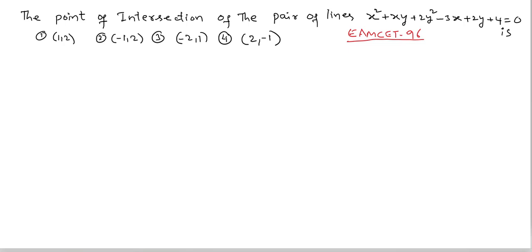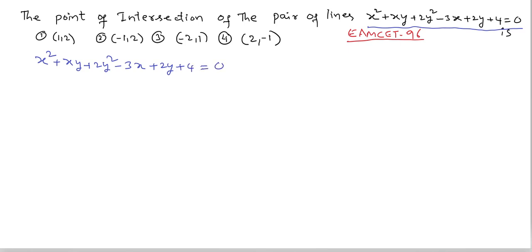The point of intersection of the pair of straight lines represented by x² + xy + 2y² - 3x + 2y + 4 = 0 is to be found. The options are: (1,2), (-1,2), (-2,1), and (2,-1). The given pair of lines is x² + xy + 2y² - 3x + 2y + 4 = 0.